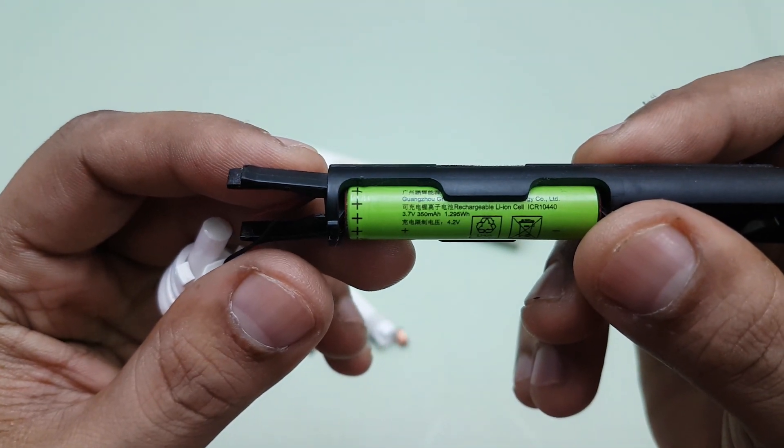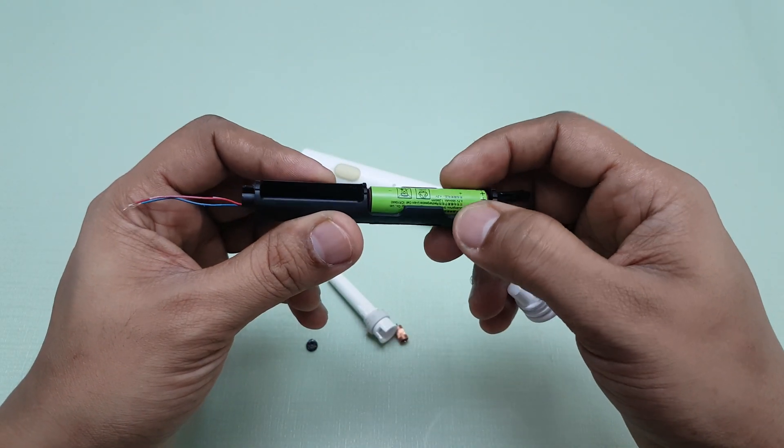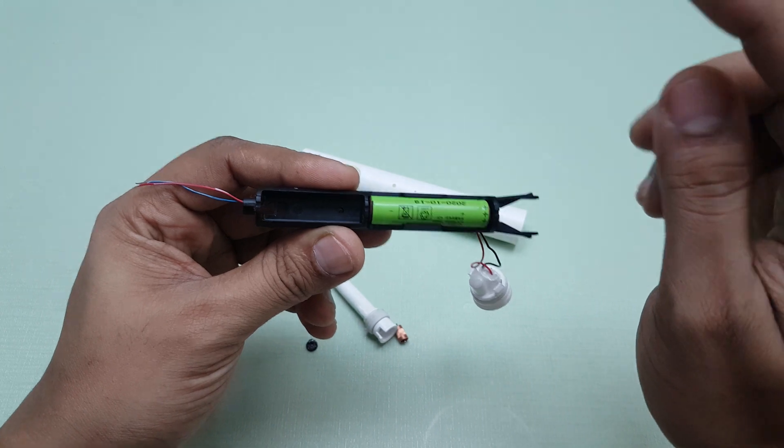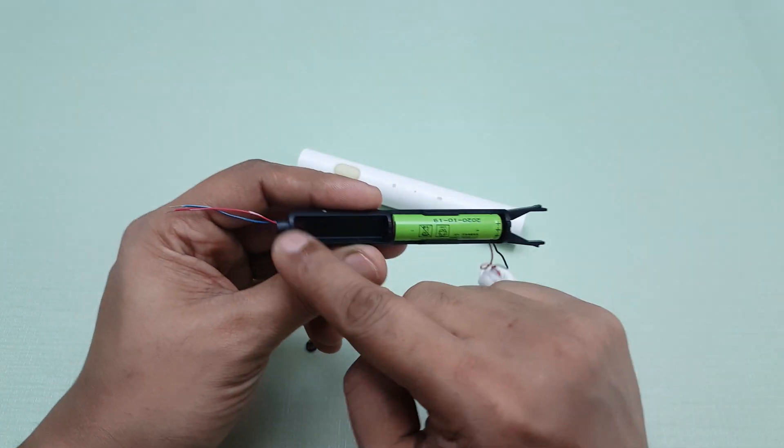It's actually quite small. If you've seen my disassembly videos for the MI trimmers, in them the battery is much bigger, a little more longer.